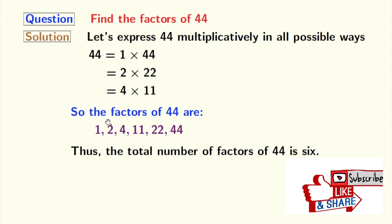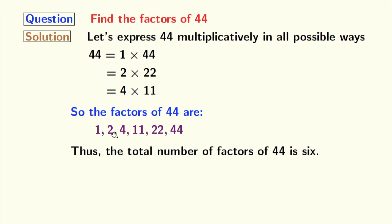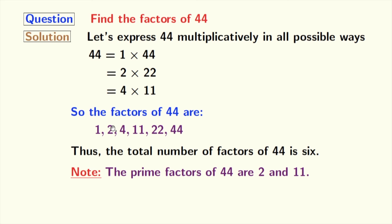Now if we look at these factors, we can see that among these numbers, 2 and 11 are prime numbers because these two numbers do not have any divisor other than 1 and that number itself. So we can say that the prime factors of 44 are 2 and 11.